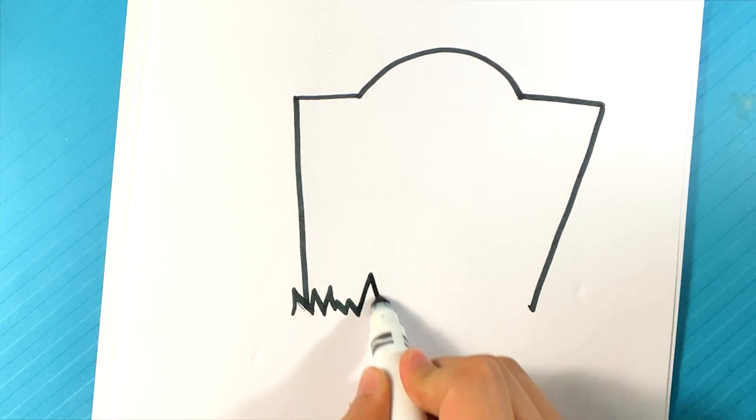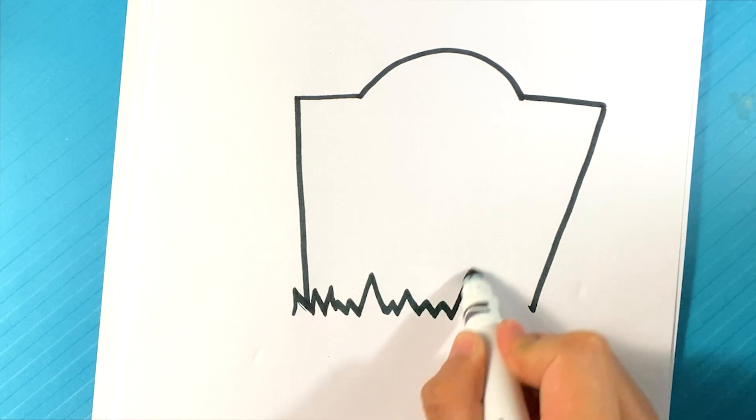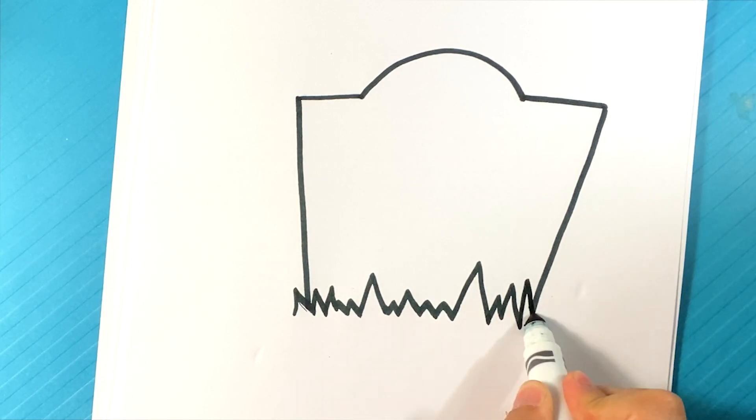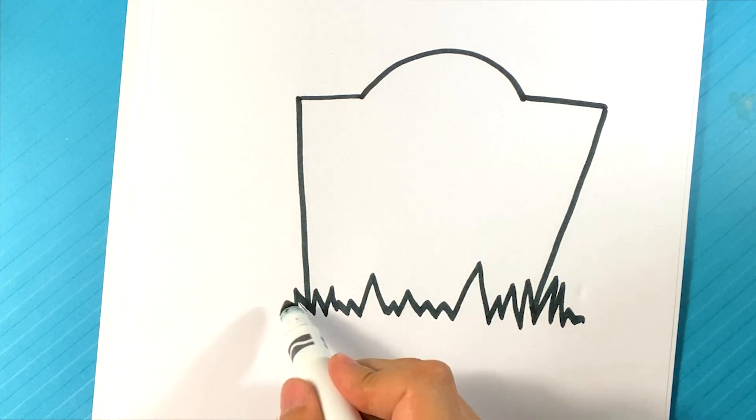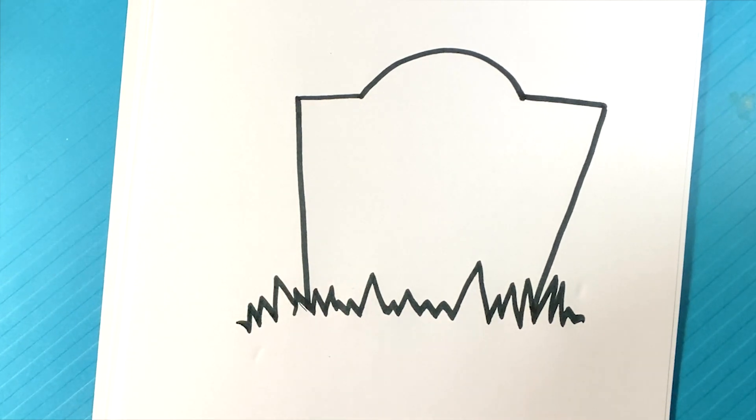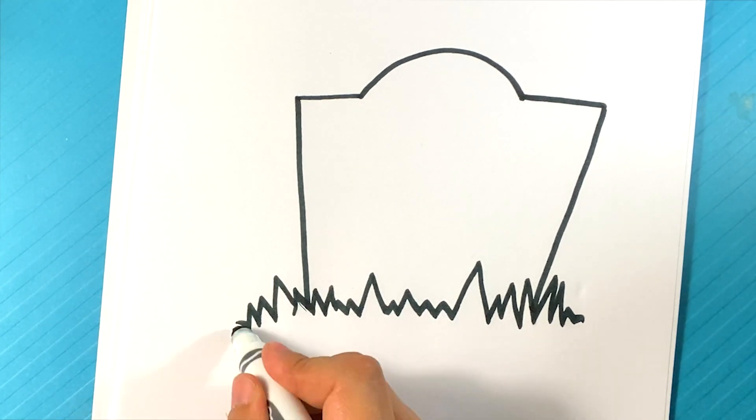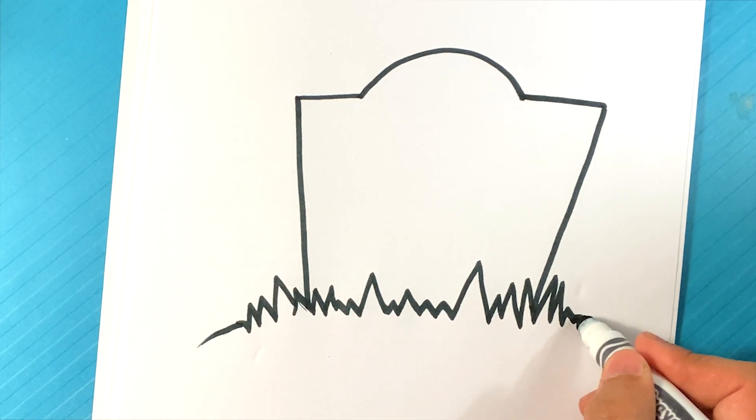I'm going to do a zigzag shape here to simulate grass, right? There's some grass around. And we could have a trail off over here and straight over here on this side.